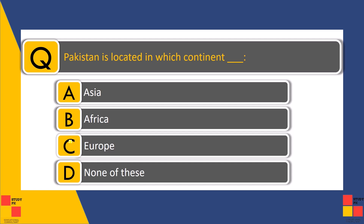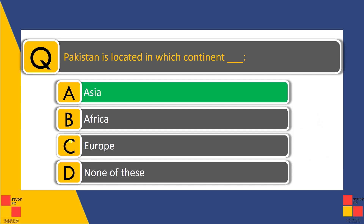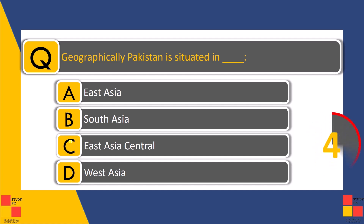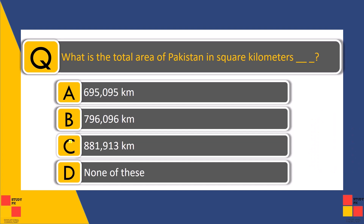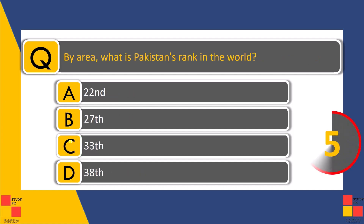Now the quiz section. First: Pakistan is located in which continent? — Asia. Geographically, Pakistan is situated in — South Asia. What is the total area of Pakistan in square kilometers? — 881,913 square kilometers. By area, what is Pakistan's rank in the world? — 33rd.